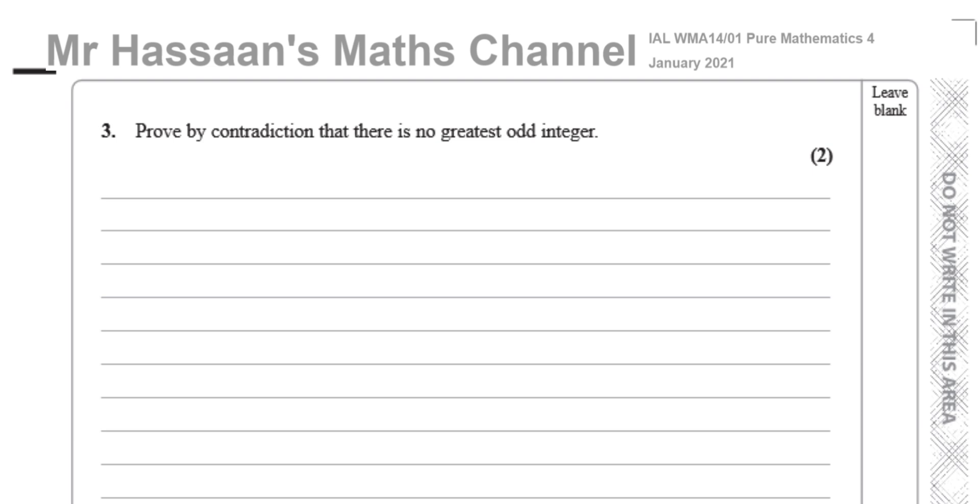So first of all it says, prove by contradiction that there is no greatest odd integer. First of all, you have to assume that there is a greatest odd integer. So we say, let's assume that, let's call it n, is the greatest odd integer. So we made an assumption that there's no integer that's odd greater than n.